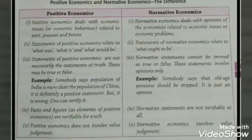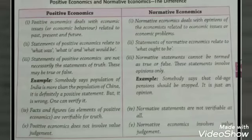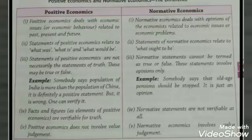Under positive economics, facts and figures are there to verify for truth, whereas under normative economics statements are not verified — they are merely opinions. Similarly, positive economics does not involve any value judgment because there is no opinion, whereas normative economics involves value judgment because economists come up with their own opinions and judgments differently on the same economic issues. That is the difference between positive economics and normative economics.